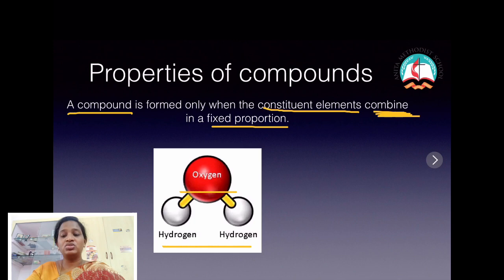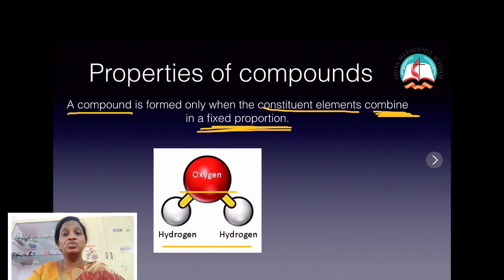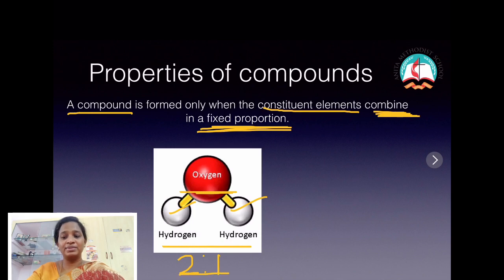These two elements combine in a fixed proportion — two atoms of hydrogen and one atom of oxygen — and combine together to form a compound.